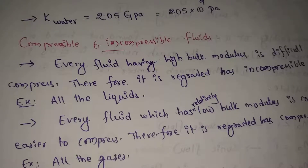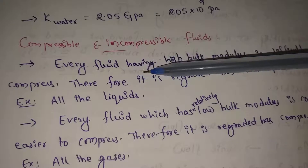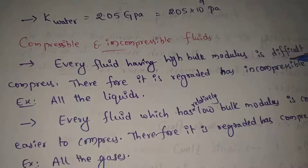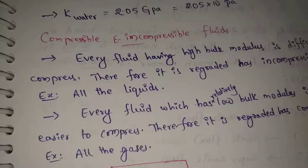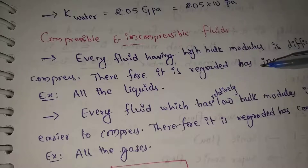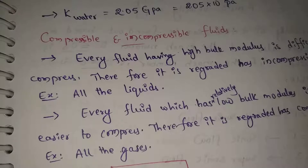Every fluid having high bulk modulus is difficult to compress. So, if the bulk modulus is high and it is difficult to compress, it is regarded as an incompressible fluid. If we say that a fluid has a very high bulk modulus, that fluid is incompressible.